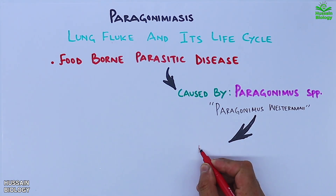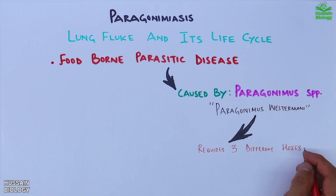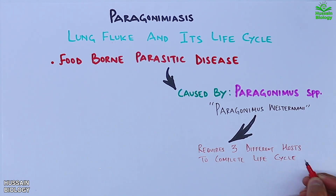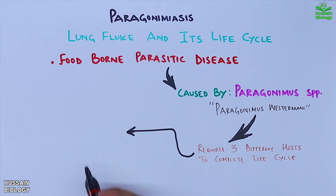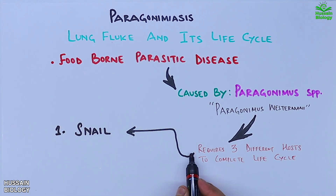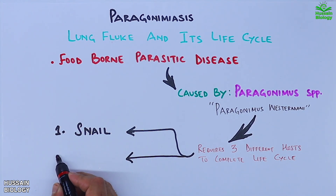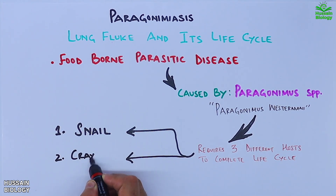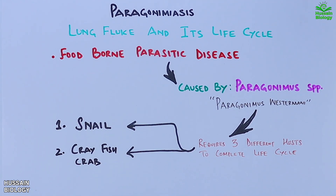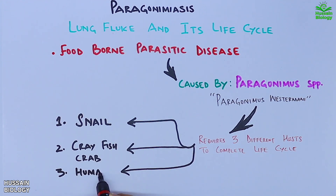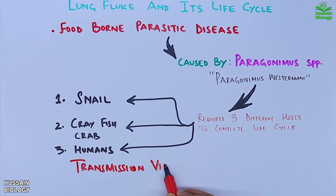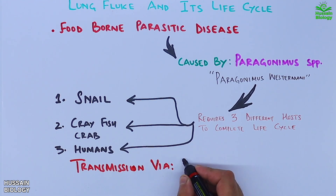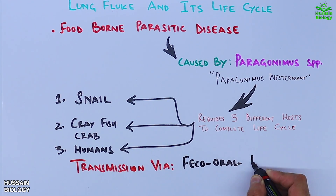This species requires three different hosts to complete the life cycle. The first intermediate host is the snail, the second intermediate host is crayfish or crab, and the definitive host is humans. The parasitic transmission is via the feco-oral route.